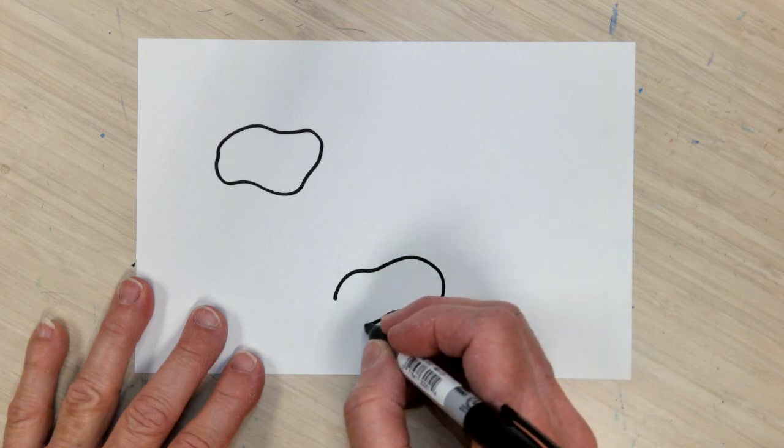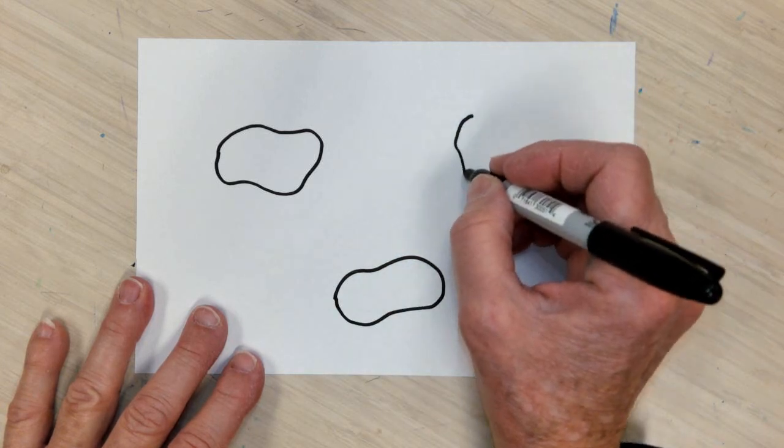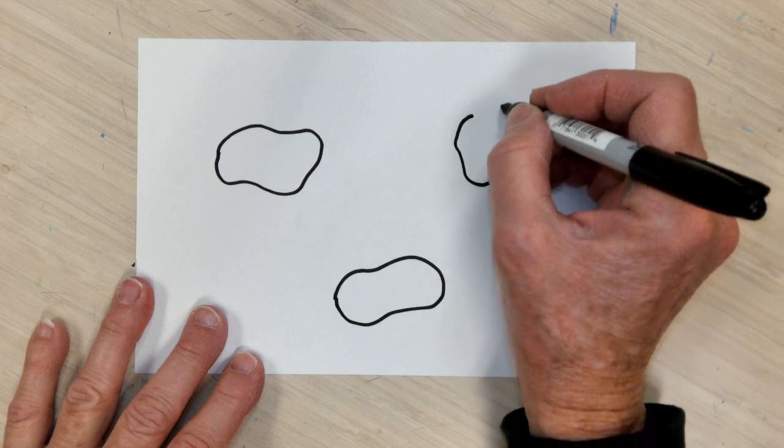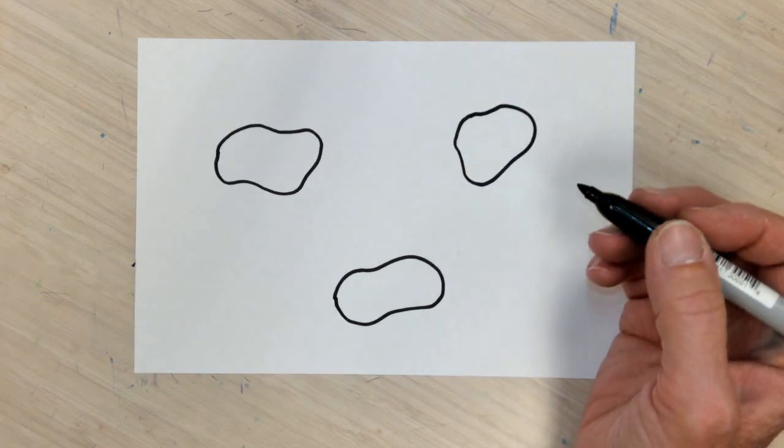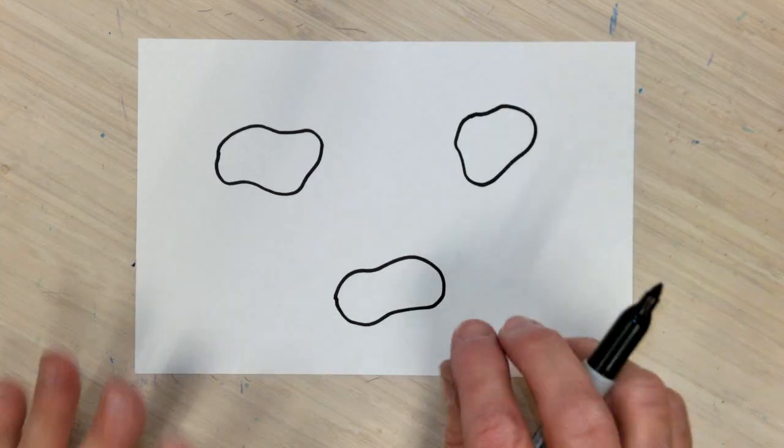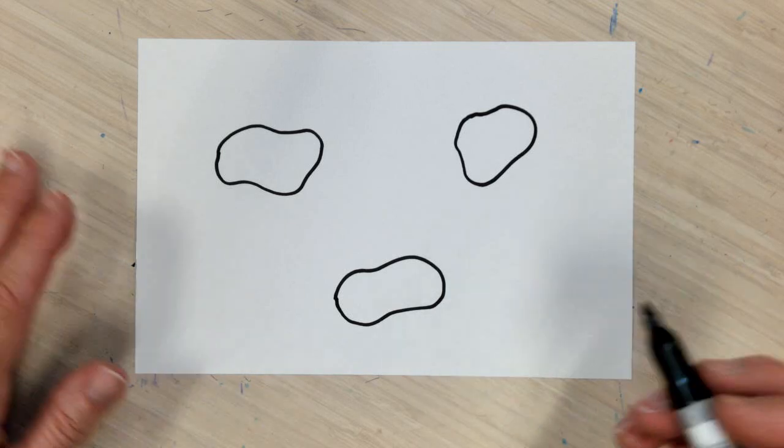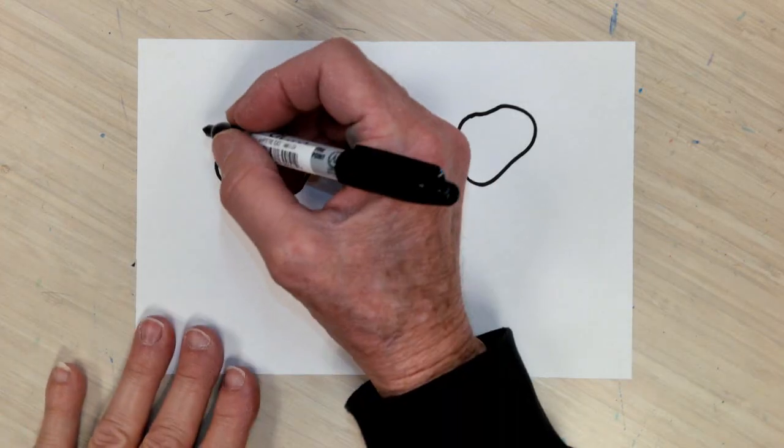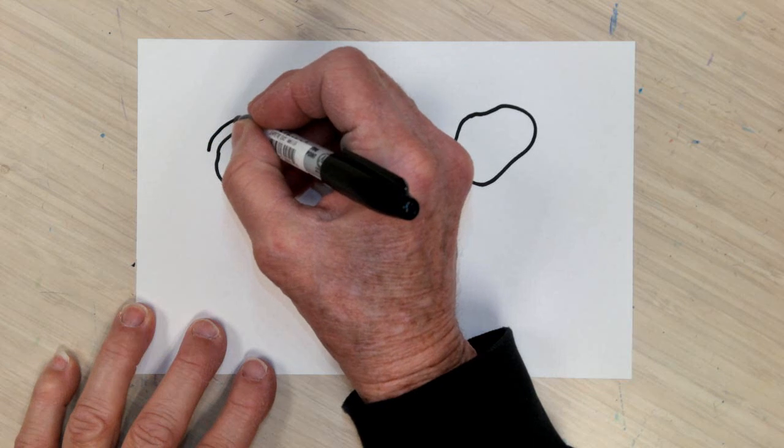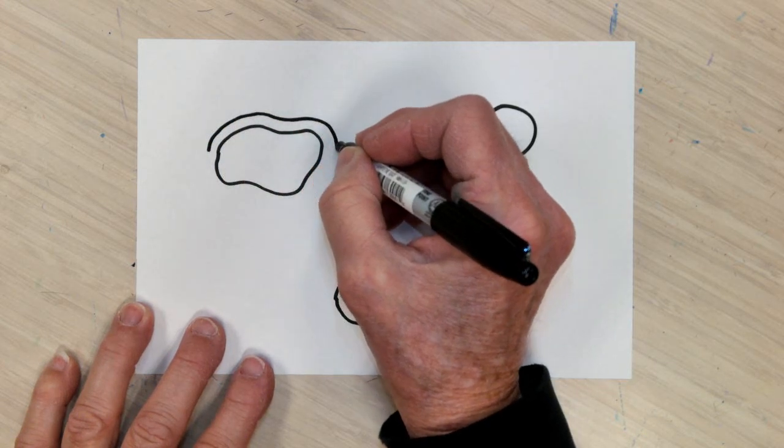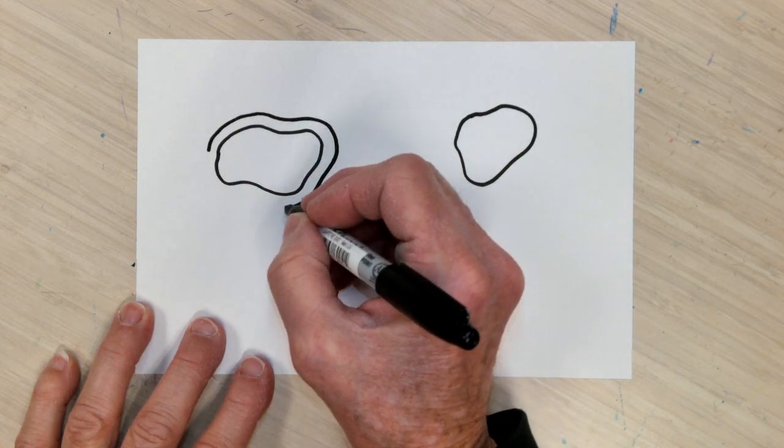And then you're just going to do a contour line drawing around each one. The key to getting it really interesting is following the contour around each rock, because we're pretending these are rocks.